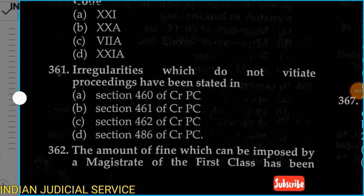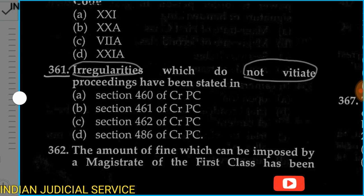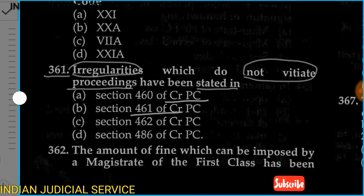Question number 361: The irregularities which do not vitiate the proceedings have been stated in which section? Option A: Section 460 of CrPC. Option B: Section 461 of CrPC. Option C: Section 462 of CrPC. Option D: Section 486 of CrPC. The answer is Section 460 of CrPC.